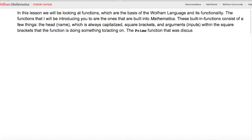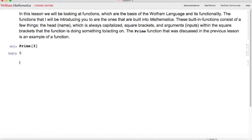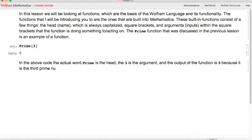The Prime function that was discussed in the previous lesson is an example of a function. Here I'm going to type Prime of 3, hit shift enter, and it's 5. In the above code, the actual word Prime is the head, the 3 is the argument, and the output of the function is 5 because it is the third prime number.